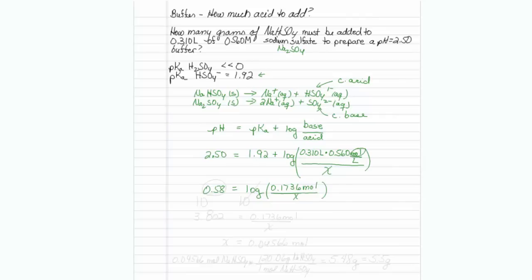The way to get rid of logarithms is to take things to the tenth power. So that gets rid of my log there, and this just comes out 0.1736 moles over x.